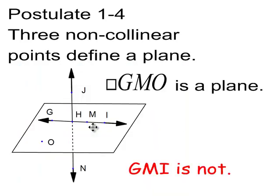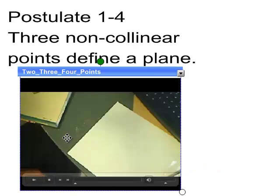Now, I think I said before, yes I did, that those points G, M, and O are coplanar points. They're on the same plane. And then here is a video to illustrate this, that you need three points to define a plane.